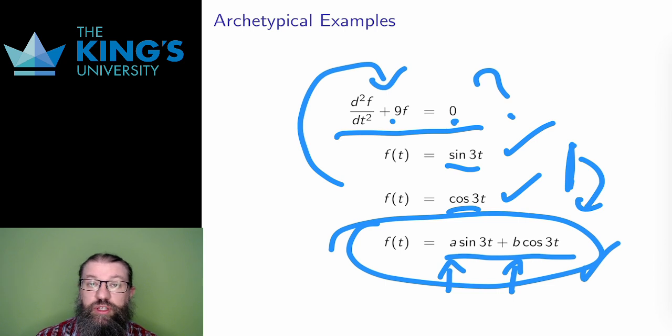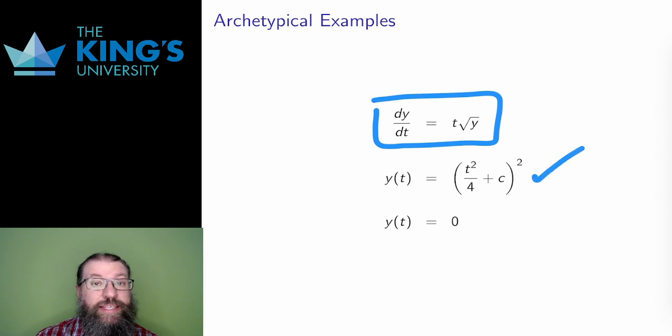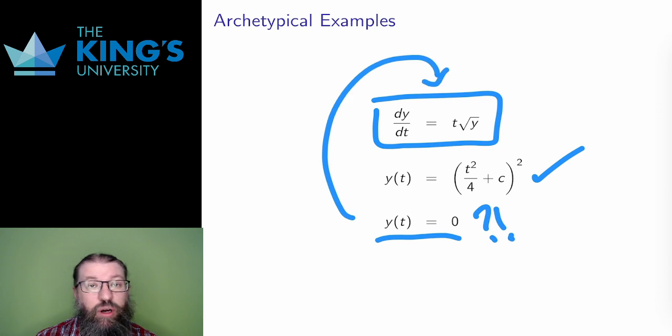Here is a first-order DE. It's a strange one, but the function y equals t squared over 4 plus c all squared is a family of solutions for any value of the constant c. However, there is also the solution y equals 0. And again, feel free to take the derivatives and put the pieces in the original equation to verify that these are in fact solutions.